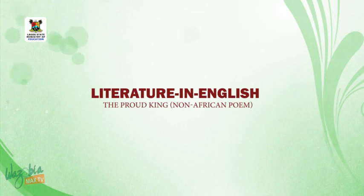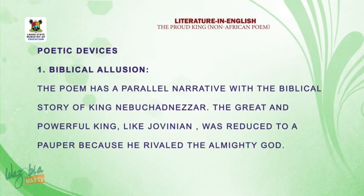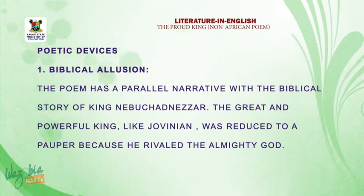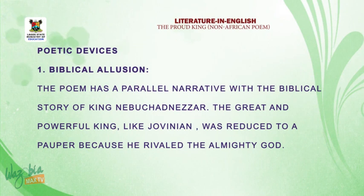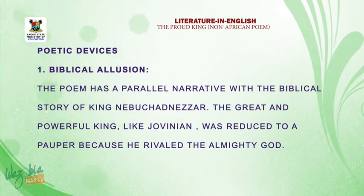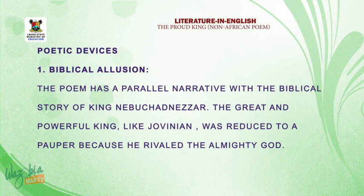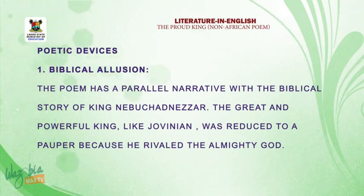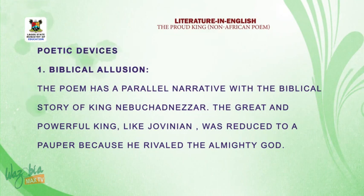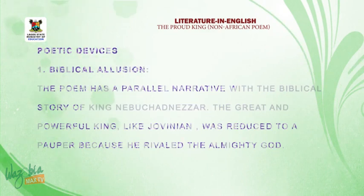Welcome, students. It is time to consider the poetic devices of the poem. Pay attention because this is the area students find very difficult to understand. One of the poetic devices used by William Morris is biblical allusion. The Proud King uses biblical stories as its springboard. King Jovenian is a replica of biblical figures like King Nebuchadnezzar, King Herod, and King Pharaoh. Allusion is an indirect reference, and the entire poem has indirect reference to biblical stories.